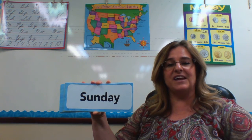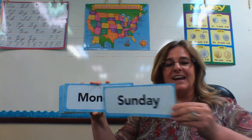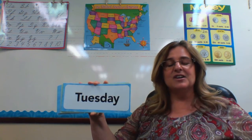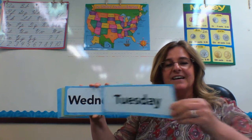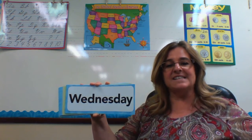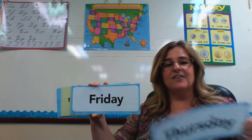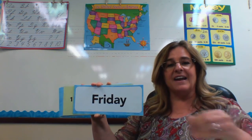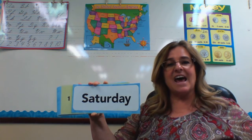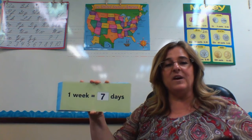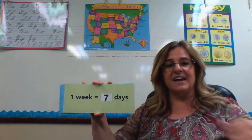We're going to do a quick review of the days of the week and the months of the year. Sunday, Monday, Tuesday, Wednesday, Thursday, Friday, Saturday. One week equals seven days.